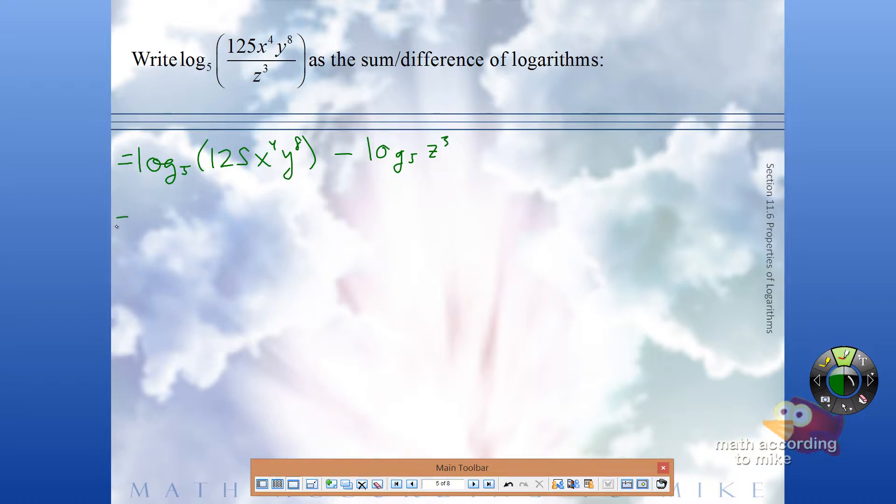And now that first logarithm can be broken into three parts because we have three parts in our product. Log base 5 of 125, product rule says plus, log base 5 of x to the fourth, plus log base 5 of y to the eighth. And this log base 5 of z cubed just falls in front.